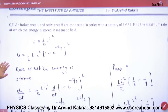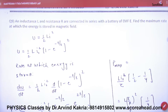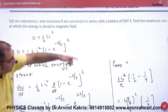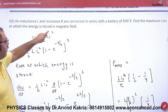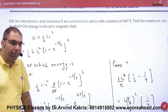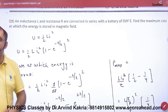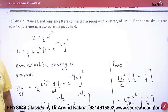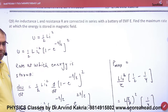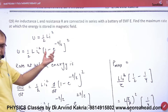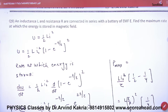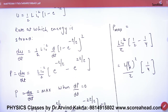The next question: inductance L and resistance R are connected in series as an LR circuit with a battery of EMF E. Find the maximum rate at which energy is stored in the magnetic field. The energy stored in the magnetic field is ½LI². Since the battery is connected, the current increases with time as i = I₀(1 - e^(-t/τ)). Substituting gives instantaneous energy.